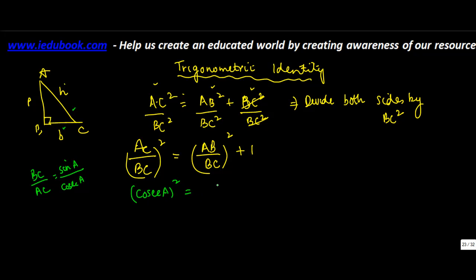Whole square is equal to AB upon BC. Again, this seems to be a little in the reverse order, because we know that BC upon AB is equal to tan A. So AB upon BC will be what? Cot A.